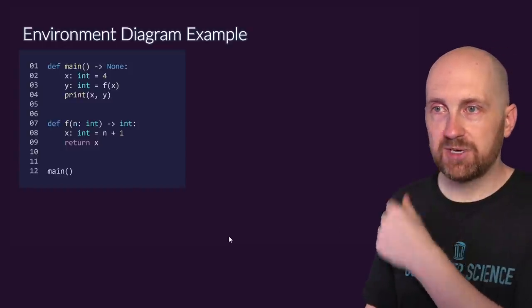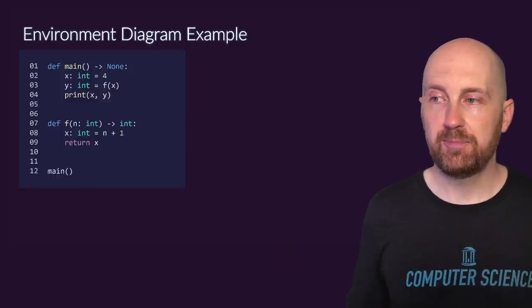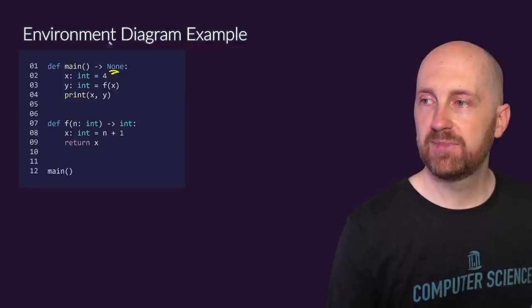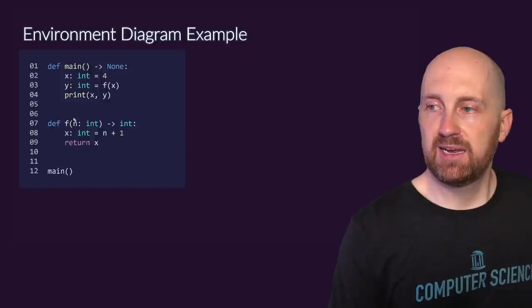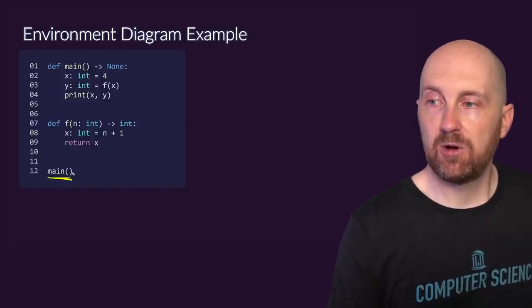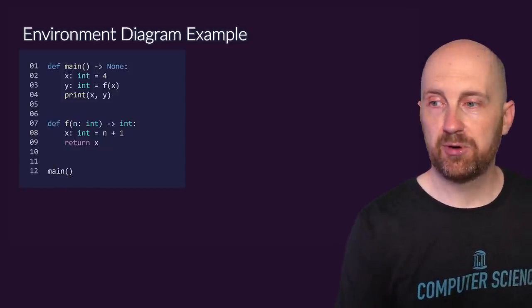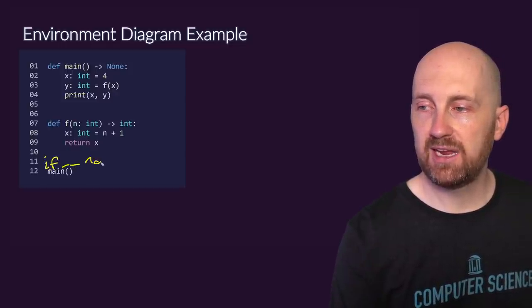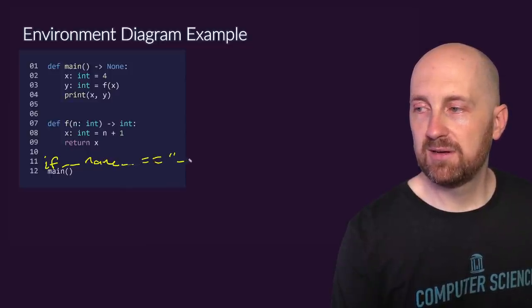Let's look at an example where we've got two functions defined followed by a call to main. The first function is main and notice it has a return type of none, so it's a procedure. The second function is f and it has one parameter and a return type of int. The call to main occurs on line 12. Typically in a Python program, we should have an if statement like: if __name__ == "__main__", then call main.